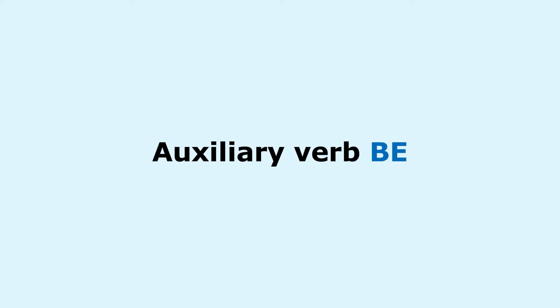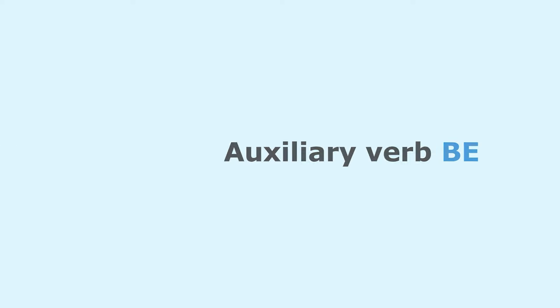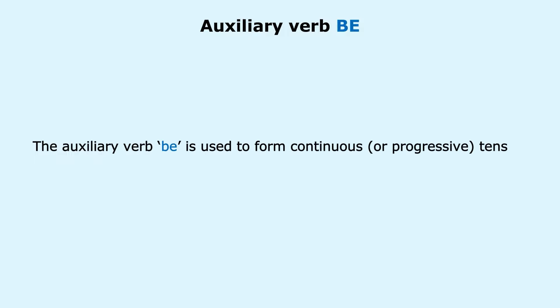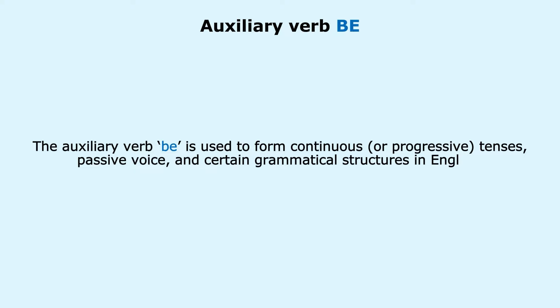Let's start with the auxiliary verb Be. The auxiliary verb Be is used to form continuous or progressive tenses, passive voice and certain grammatical structures in English.